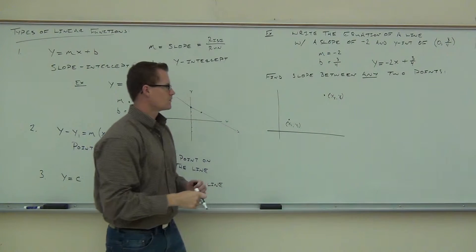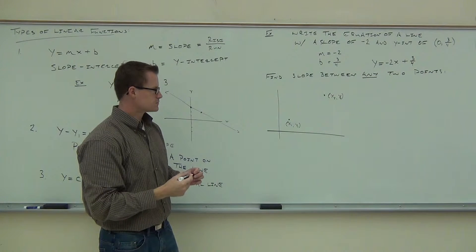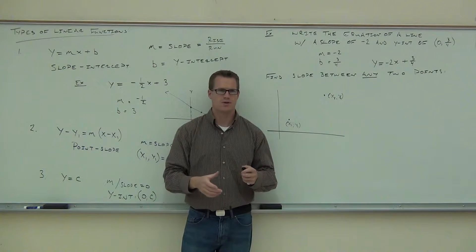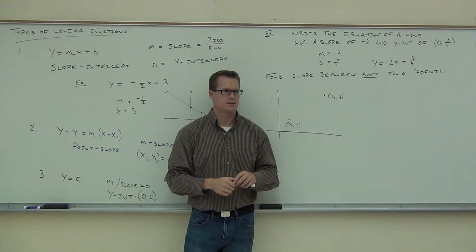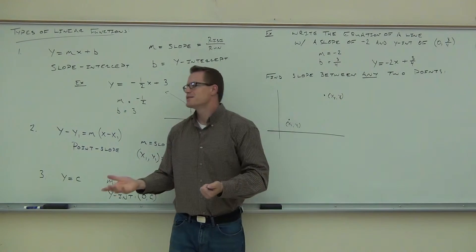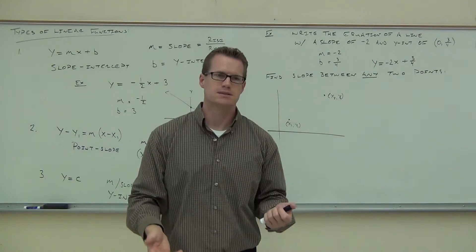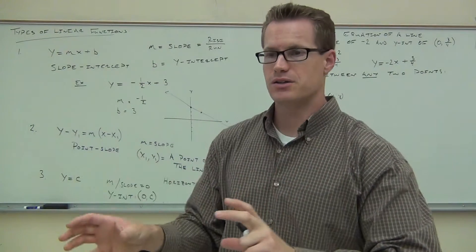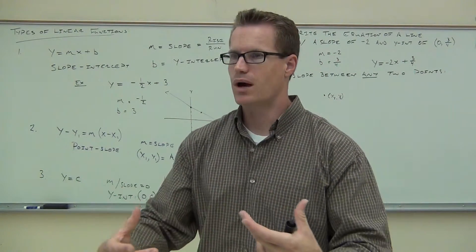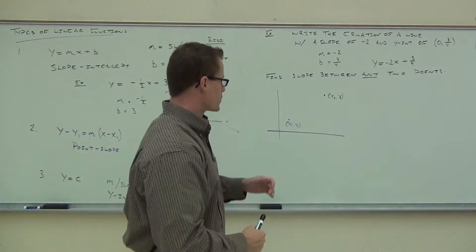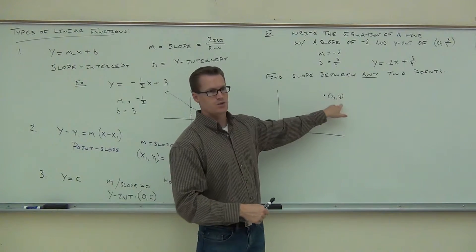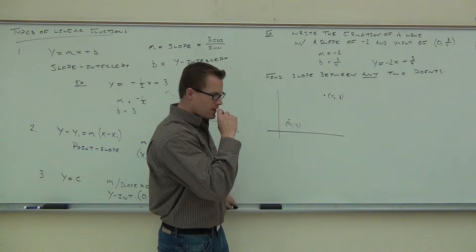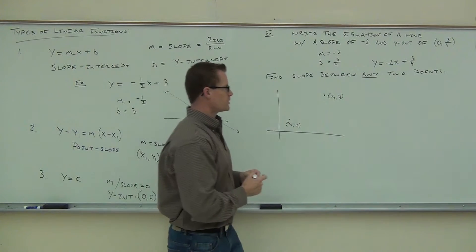Are you okay with that notation? Good. So we've got these two general points — they're general because we haven't said any specific values. We just have x1, y1 and x2, y2. Notice how the ones have to go together and the twos have to go together, because the first point is x1, y1 and the second point is x2, y2.